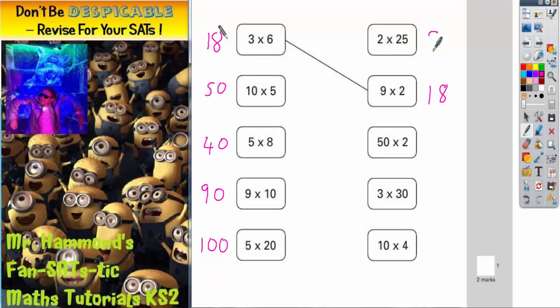2 times 25 is 50. So the 50s have got to match. 50 times 2 is 100. So the two hundreds have got to match. So that's those two.